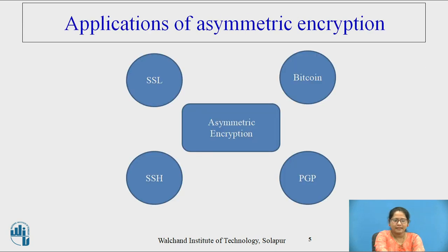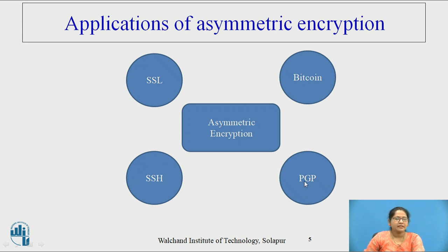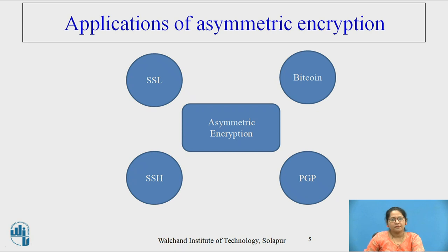Applications of asymmetric encryption include SSL, SSH, PGP (Pretty Good Privacy), and Bitcoin blockchain, which is one of the recent trends and hot topics in current technology.